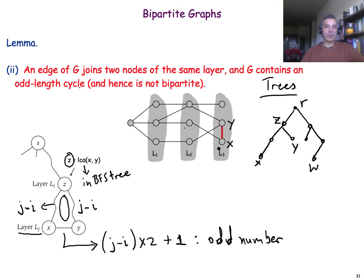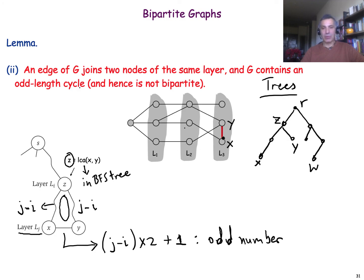In summary, to check if a graph is bipartite, use BFS to place nodes in successive layers. If any edge connects two nodes in the same layer, the graph is not bipartite. Otherwise, the graph is bipartite, and you have successfully labeled all nodes as either blue or red depending on which layer they reside in.